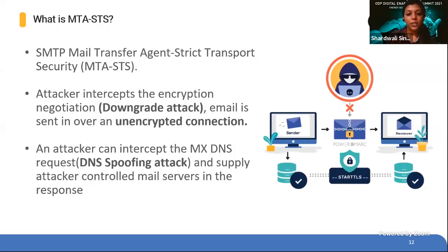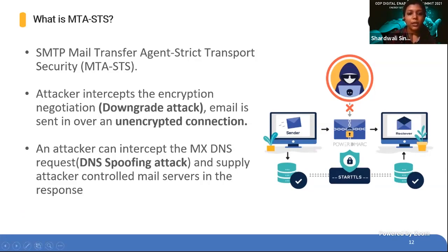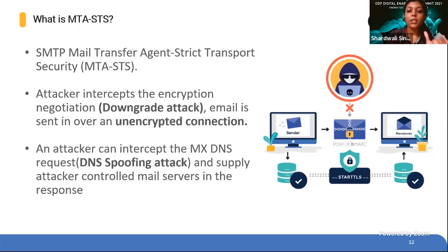Attackers can also intercept the request made by your sending server when trying to deliver email, rerouting those emails to their own server — which we call a spoofing attack. When attackers spoof your DNS, they can control the email content being sent in transit between the receiving and sending server. MTA-STS helps here by enforcing TLS encryption of emails delivered to your domain, so messages are sent over a secured connection and are not delivered in clear text format. This effectively helps in mitigating existing security problems with SMTP servers that enable opportunistic encryption.